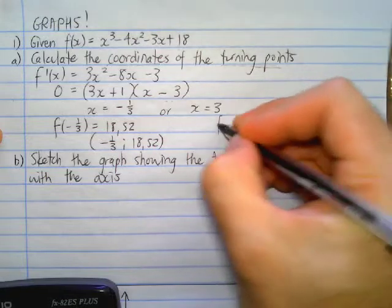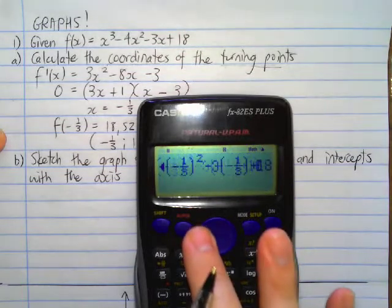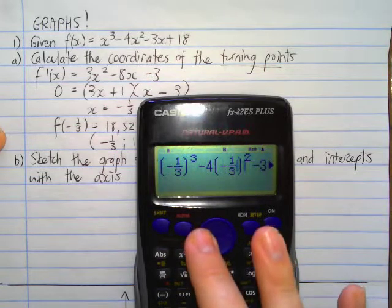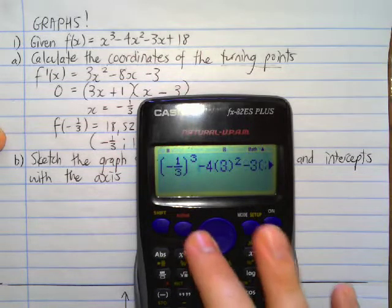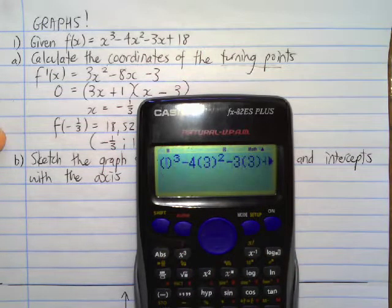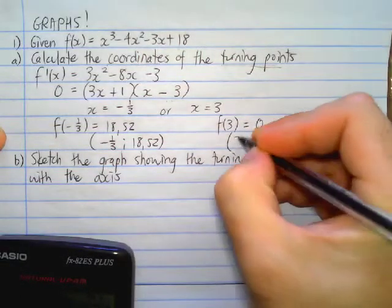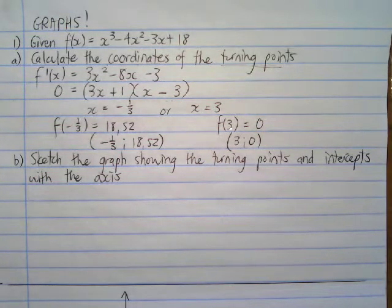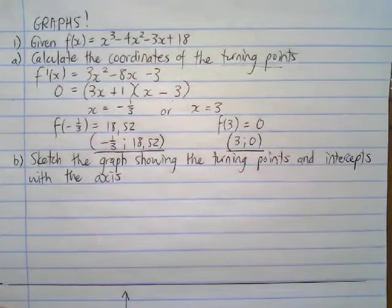For f(3), I substitute 3 into all x positions in the original function and I get 0. So that turning point is (3, 0). So we've worked out the first derivative, set it equal to zero, and found two turning points: (−1/3, 18.52) and (3, 0).